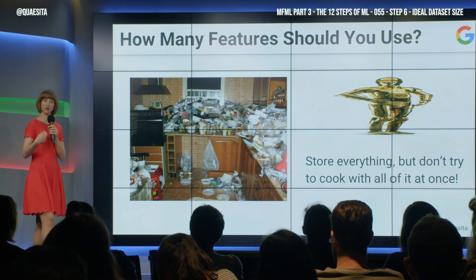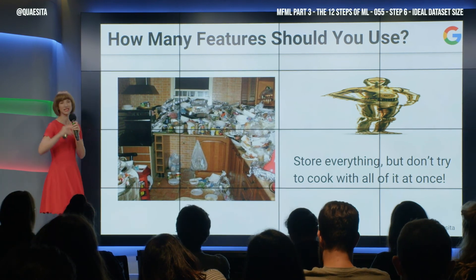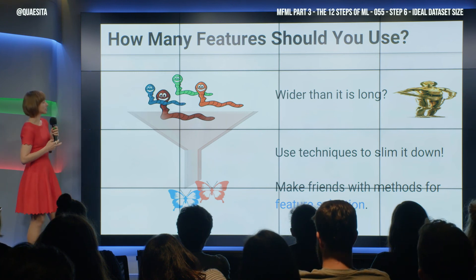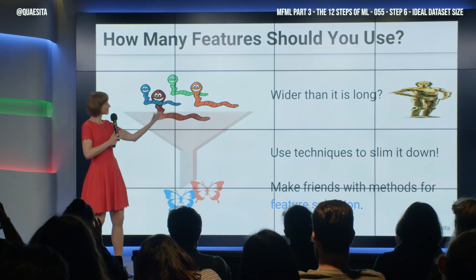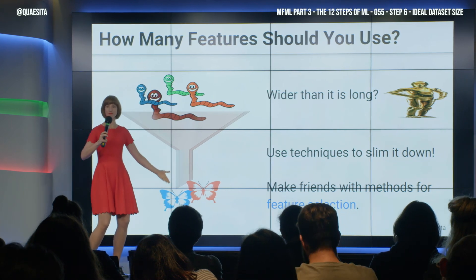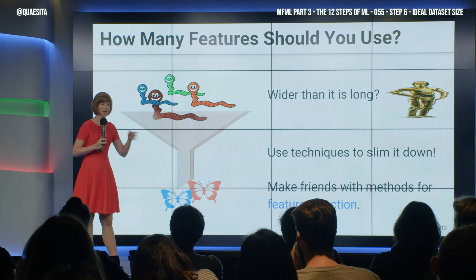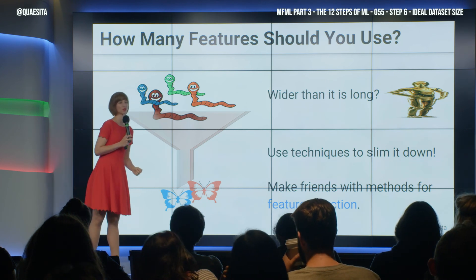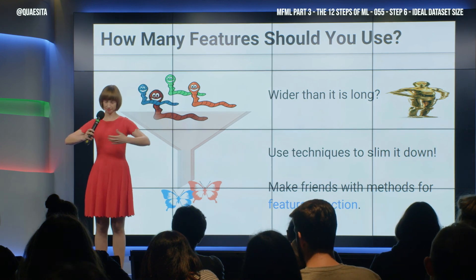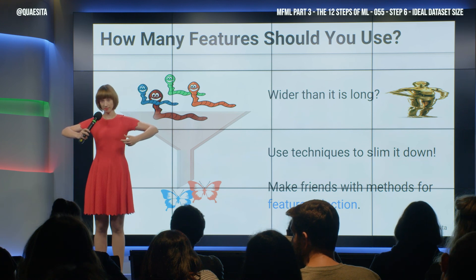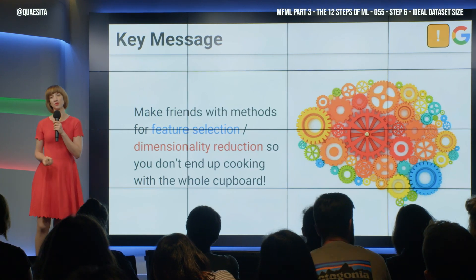There's also an algorithmic way to slim down, and that is a class of methods called dimensionality reduction or feature selection. Within these you'll hear ICA, PCA — principal component analysis — those types. What they are about, generally, is taking your input features and doing some kind of transformation and outputting fewer super-features, which are not really recognizable as the originals. But putting these into your recipe would make it work very nicely. So if you see that you're dealing with a data set that has a bit of a width problem, you want to make friends with methods for feature selection and dimensionality reduction. Don't end up cooking with the whole cupboard.